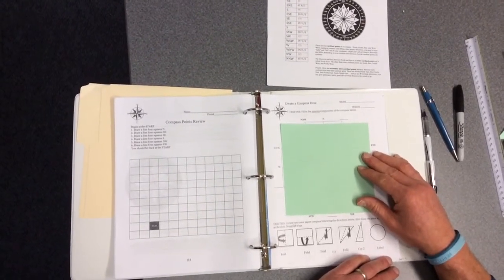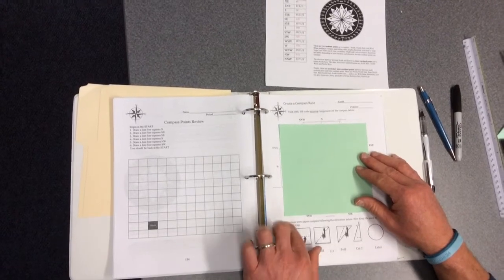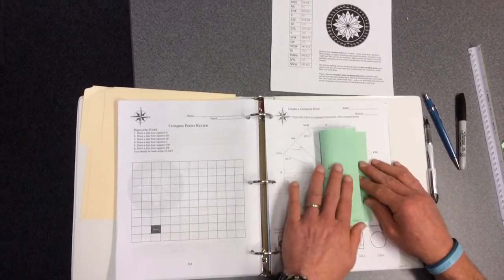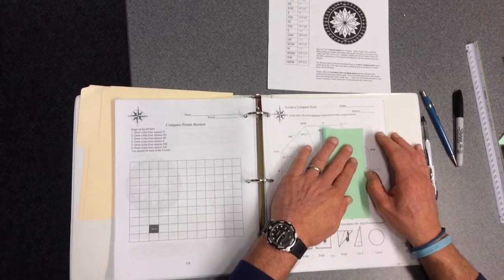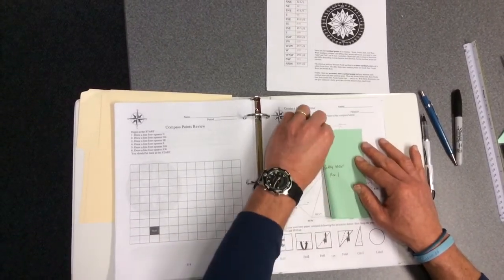Take the left hand side of your paper and bring it to the far right side. Line them up evenly and put in a nice crease.